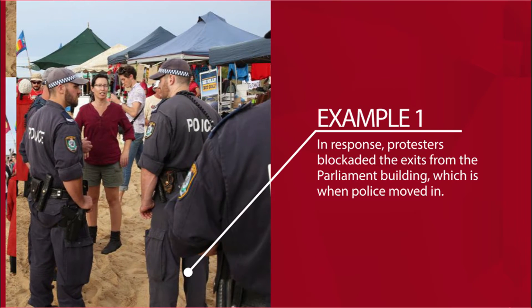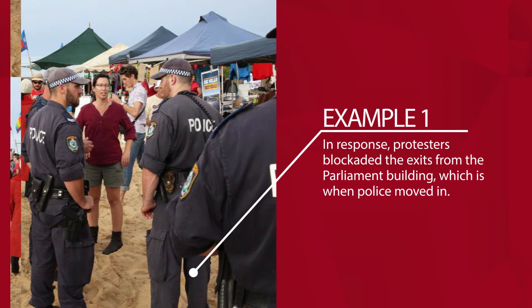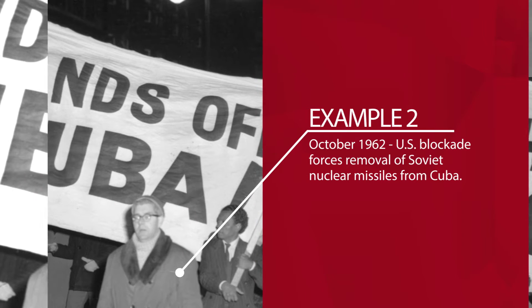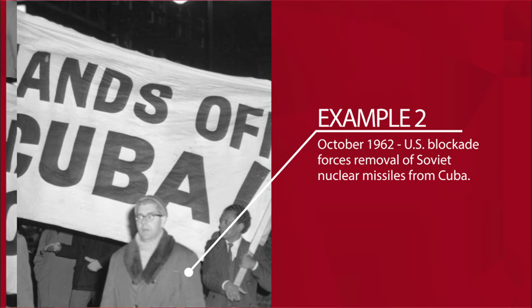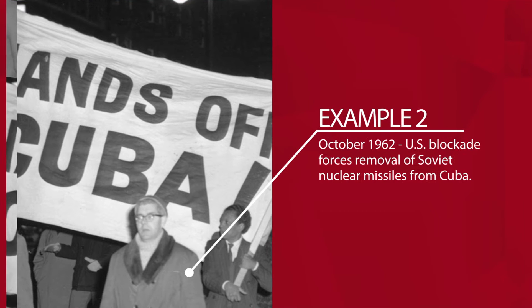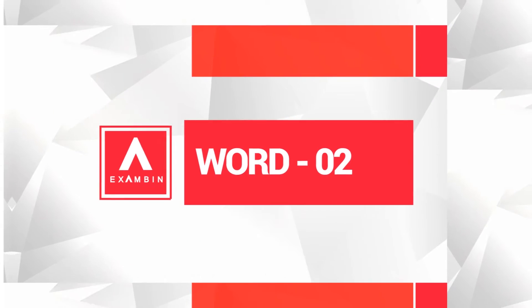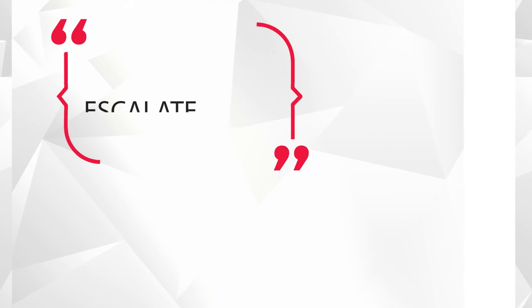We will see a few examples to understand the word blockade better. Example 1: In response, protesters blockaded the exits from the parliament building, which is when police moved in. Example 2: October 1962 — US blockade forces removal of Soviet nuclear missiles from Cuba.